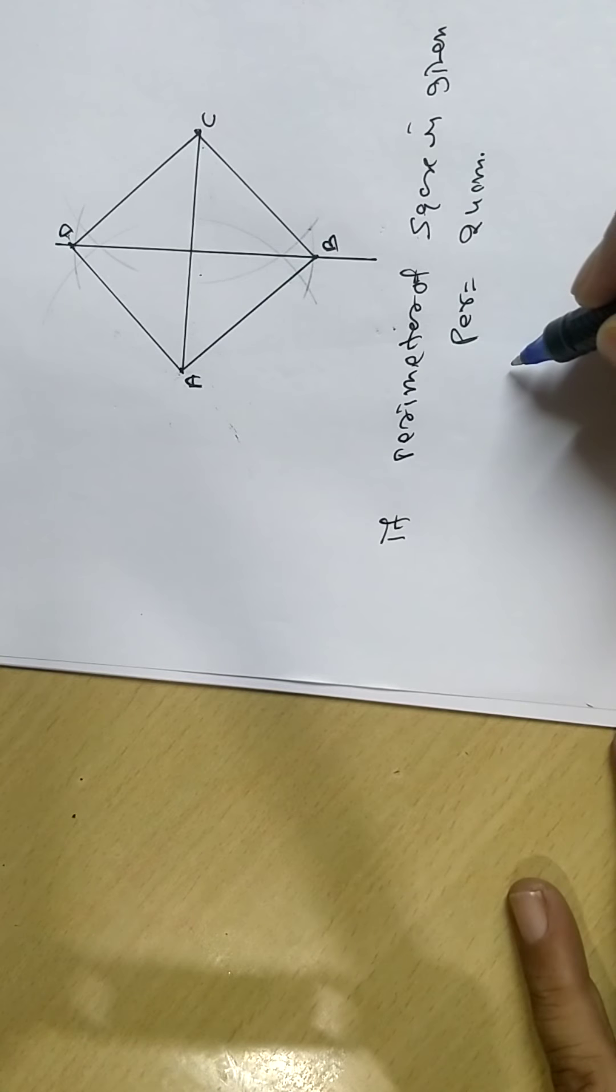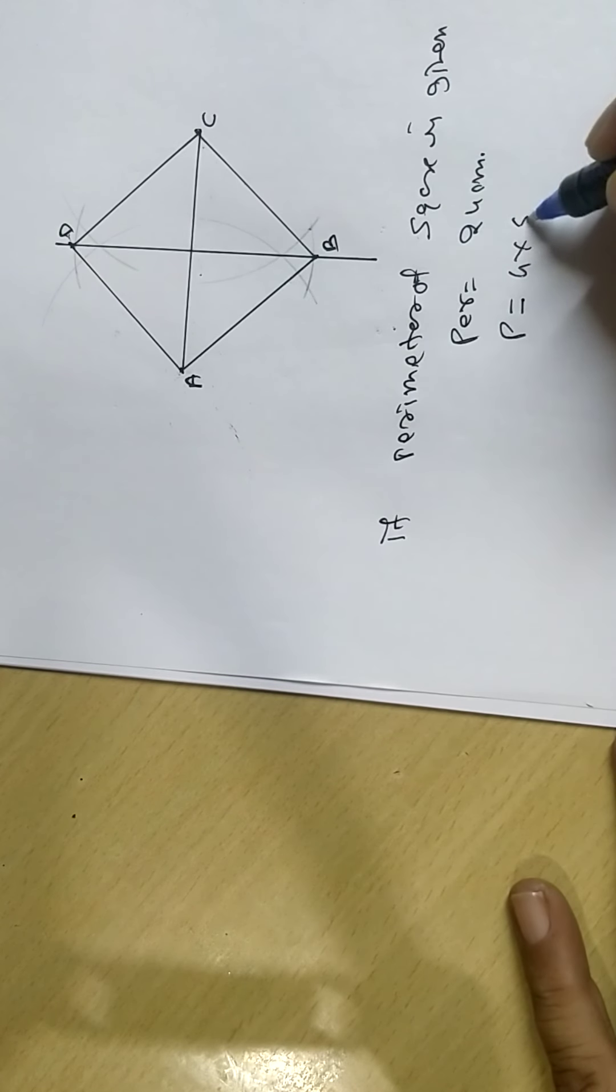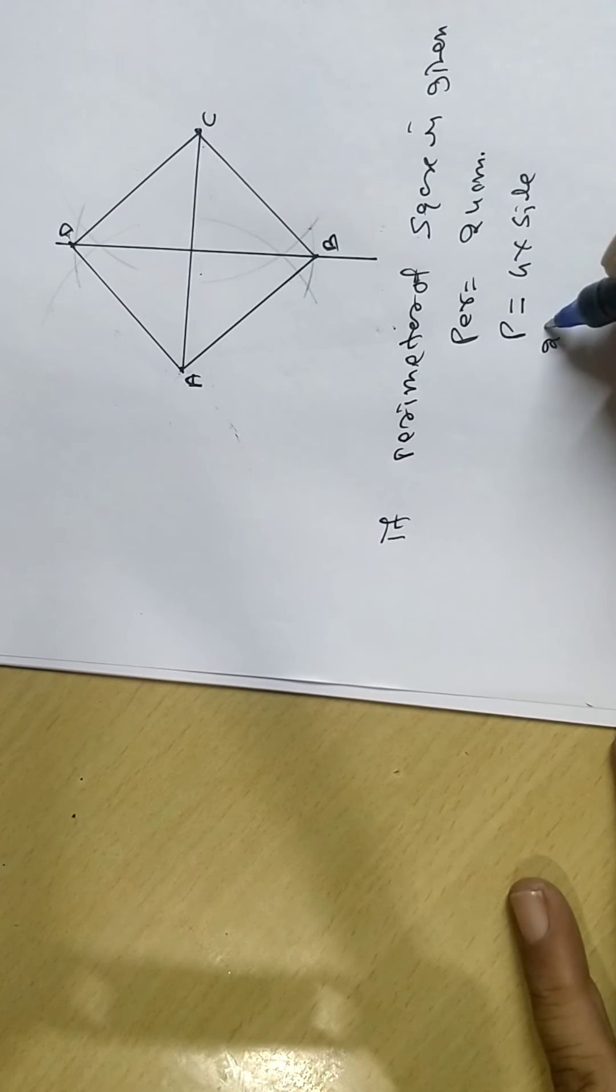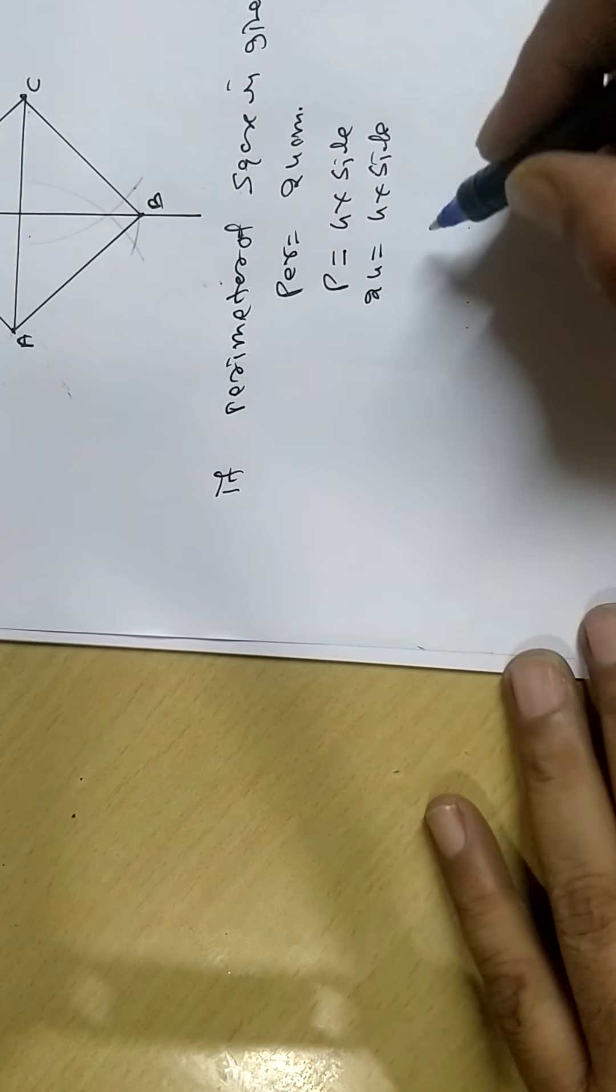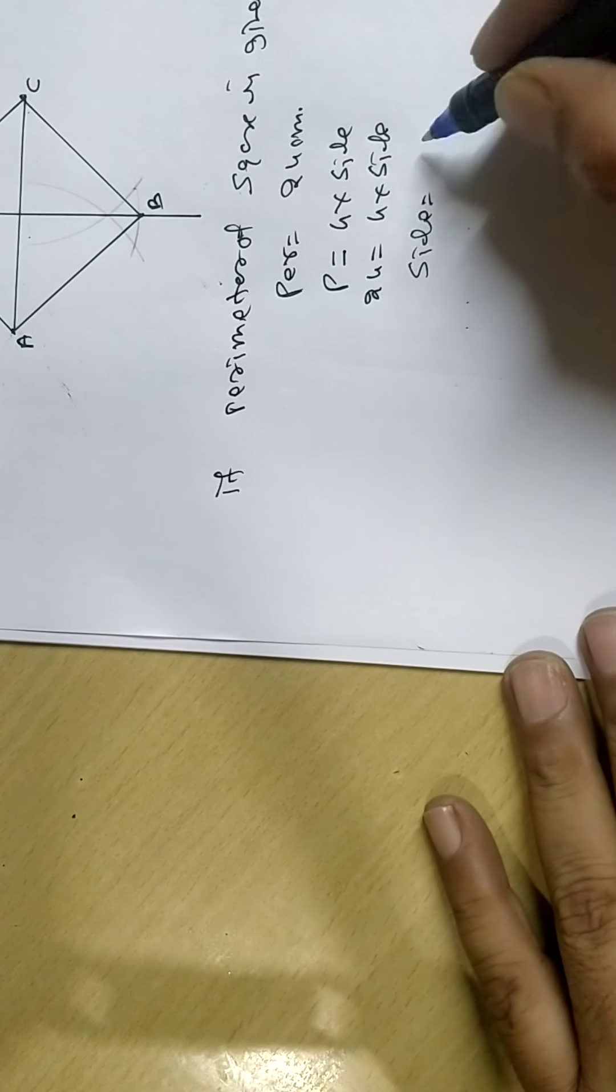We know all 4 sides are equal. So perimeter formula for square is 4 into side. 24 equal to 4 into side. So each side equal to 6 cm.